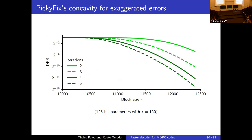Using these two simple iterative procedures, they obtain a decoder that appears concave in the desired interval. Since the negligible failure rate cannot be directly seen in simulation, this is verified using exaggerated error rates — and even at those rates, the decryption failure rate from PICKYFIX is much lower than BGF.